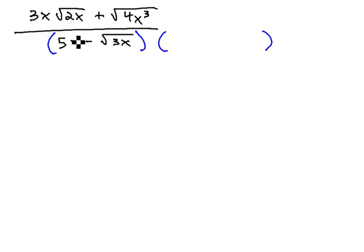And the conjugate's easy to identify, it's the same thing as the denominator. We just change the sign in the middle, 5x plus the square root of 3x in both the numerator and denominator.